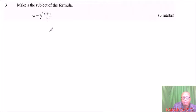The first thing that you do here is to cube both sides, so you have w cubed equals, when you cube this side here, the cube root sign will disappear and you'll be left with s plus t divided by s.